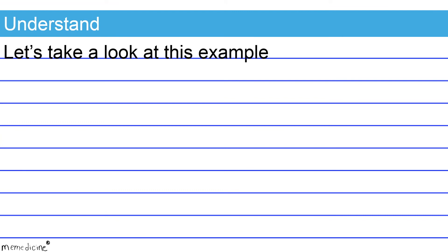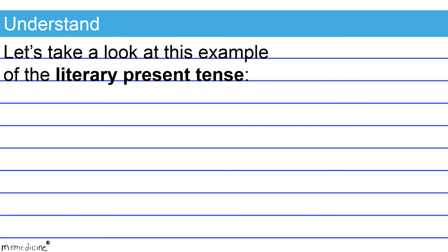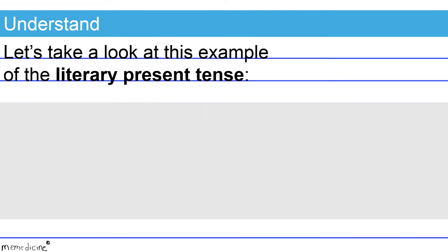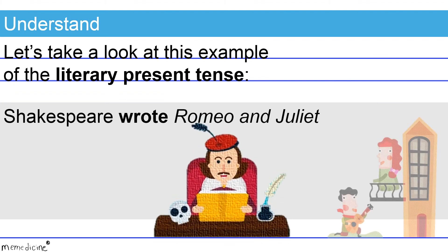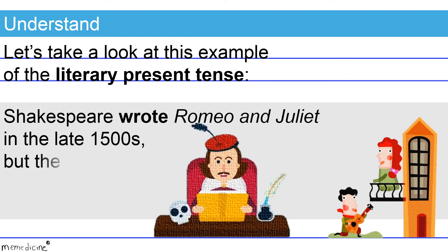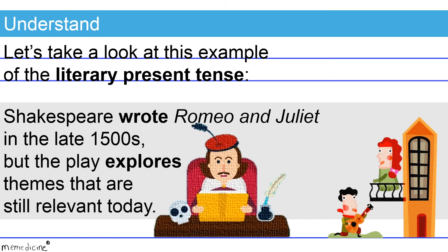Let's take a look at this example of the literary present tense: Shakespeare wrote Romeo and Juliet in the late 1500s, but the play explores themes that are still relevant today. The sentence shifts to the present tense to discuss the nature and contents of the artistic work Romeo and Juliet. This tense shift to the present tense is appropriate in this instance.